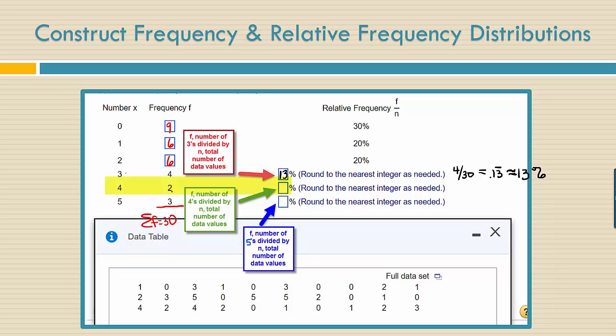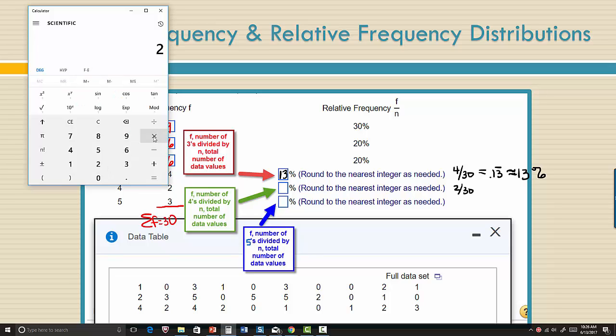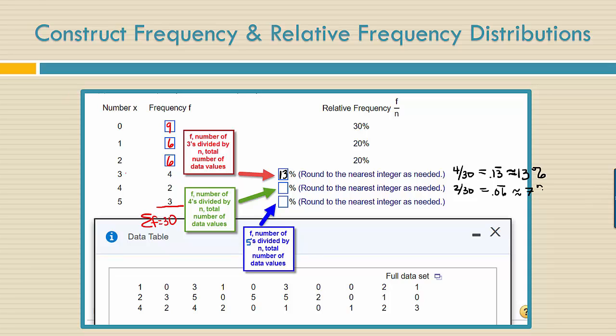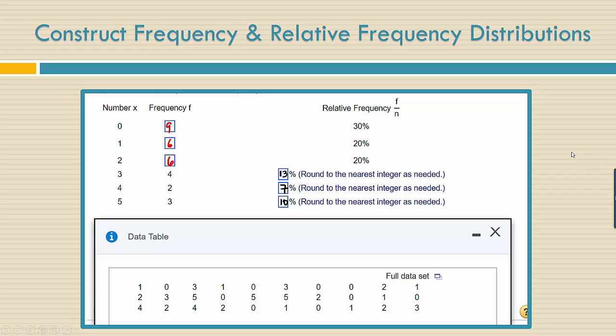The frequency of the fours is two. There were two fours in our list, so we're going to take two divided by 30. Two divided by 30 is going to give us 0.06 repeating, which is approximately 7%. The frequency of the five was three, so three divided by 30, which is one tenth if we reduce it. So that would be 0.1 or exactly 10%.